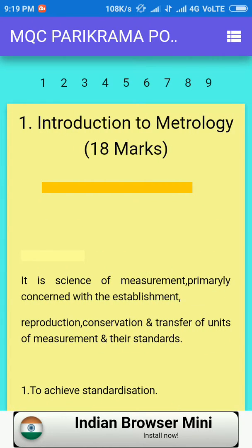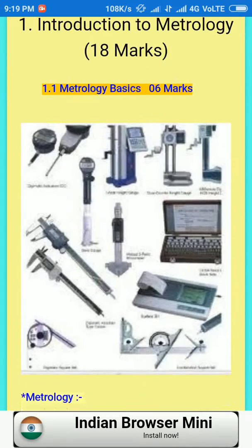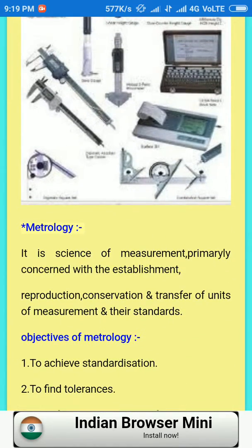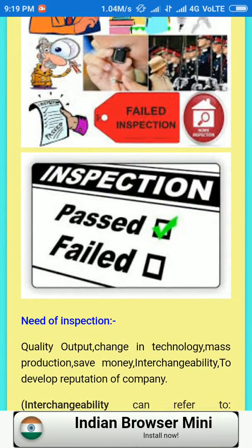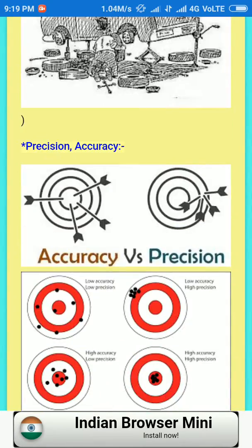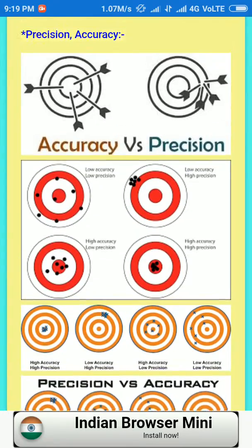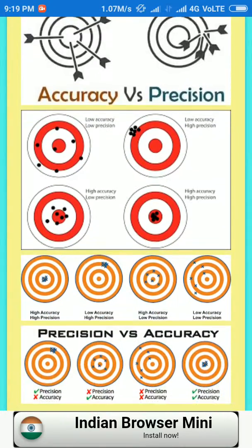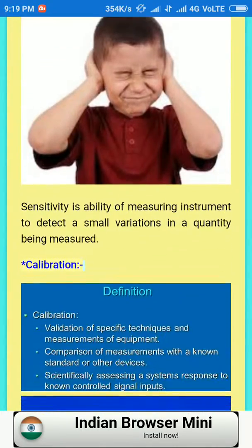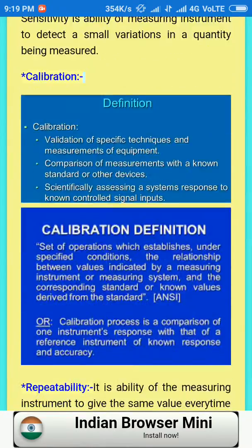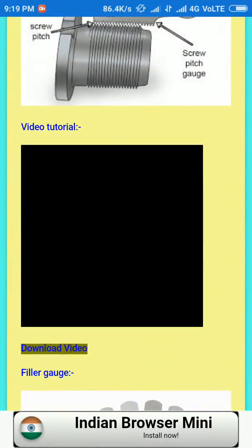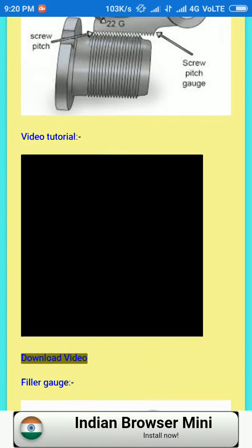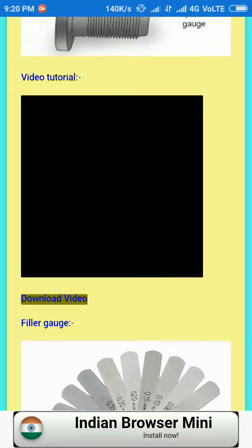The first chapter contains the science of metrology with slides, notes, and important photographs — for example, accuracy and precision, and sensitivity. In this app there is also a video tutorial, and here is a link to download that video tutorial.